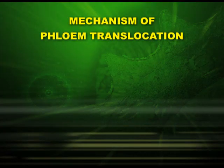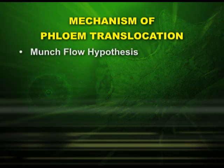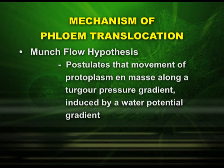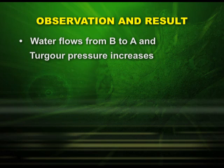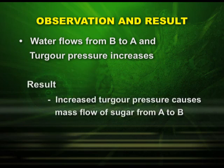Let us see the mechanism of phloem translocation. It is explained by a hypothesis called the Munch flow hypothesis, which postulates that the movement of protoplasm in phloem occurs along a turgor pressure gradient induced by a water potential gradient. This hypothesis is explained by a model called the mass flow model. The model consists of two reservoirs, A and B — one containing a concentrated solution and the other a dilute solution of sugars. Water flows from B to A, turgor pressure increases, and the increased turgor pressure causes mass flow of sugar from A to B.